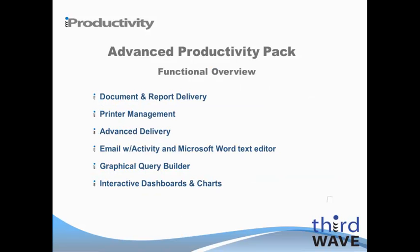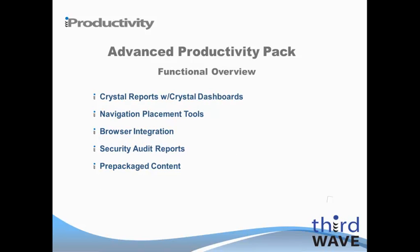The ten different functional capabilities included in the Advanced Productivity Pack are: comprehensive document and report delivery; named printer management, which lets you define one or more default printers per document or report; the advanced delivery function, which provides user-defined selection criteria and delivery rules; an email tool that delivers ad hoc emails via Outlook or SMTP and creates activity records; embedded Microsoft Word for message design and text editing; a graphical query builder that simplifies query creation; easy-to-create interactive dashboards and charts; delivery of Crystal Reports and Crystal dashboards; navigation tools that place queries, reports, and dashboards where your users need them; security reporting on authorizations by module and user; and prepackaged content that provides instant return on your investment.